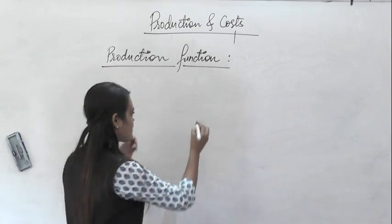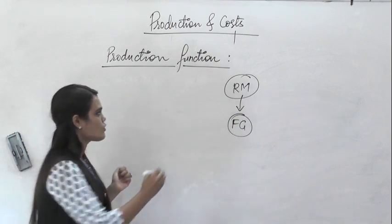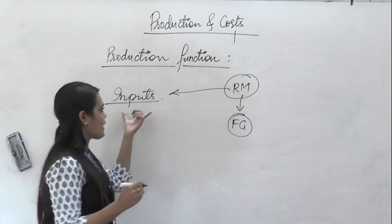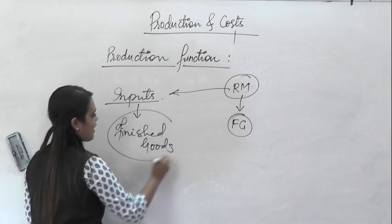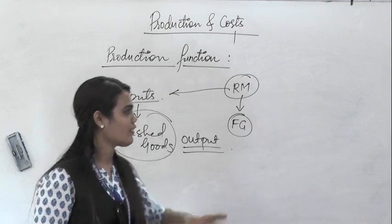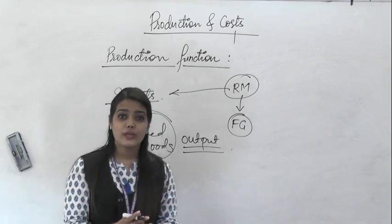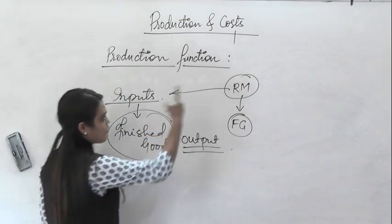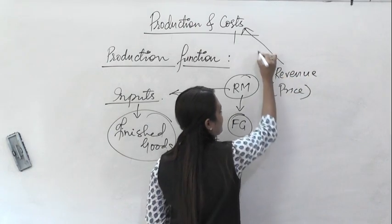Raw materials are needed in order to turn them into finished goods. These raw materials are nothing but inputs. Inputs are used by the producers and the finished goods or products are nothing but output. These outputs are sold at some price. When you associate the word 'cost,' you always associate it with inputs which are purchased. And when you say 'price,' you always associate it with finished goods — the output which the producer is going to sell.